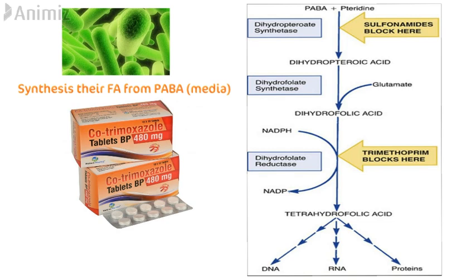Cotrimoxazole is a fixed-dose combination of sulfamethoxazole and trimethoprim in a ratio of 5 to 1.